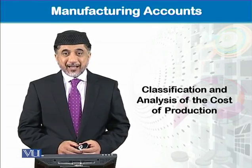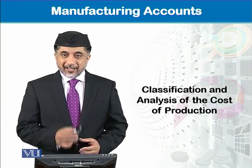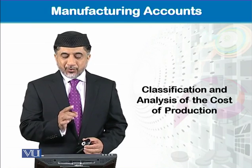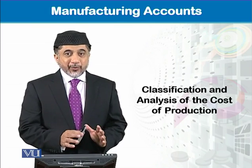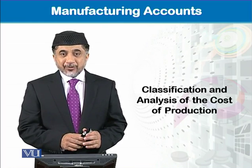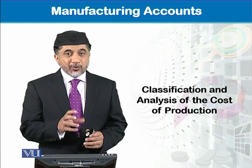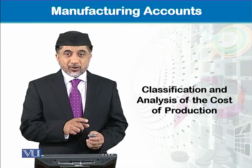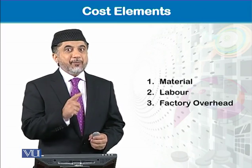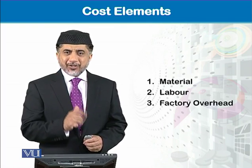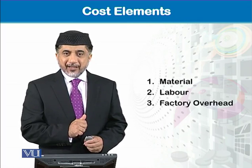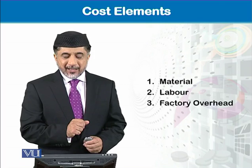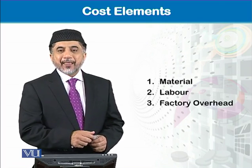Manufacturing accounts is our topic, and our current module is about classification and analysis of the cost of production. In manufacturing accounts we have to present the cost of production, and now we will learn about the cost elements. There are three cost elements: number one is material cost, number two is labor cost, and number three is factory overhead cost.